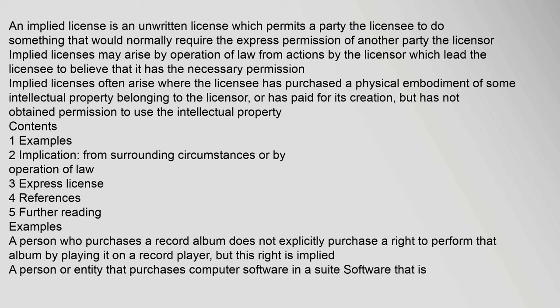An implied license is an unwritten license which permits a party — the licensee — to do something that would normally require the express permission of another party — the licensor. Implied licenses may arise by operation of law from actions by the licensor which lead the licensee to believe that it has the necessary permission. Implied licenses often arise where the licensee has purchased a physical embodiment of some intellectual property belonging to the licensor.